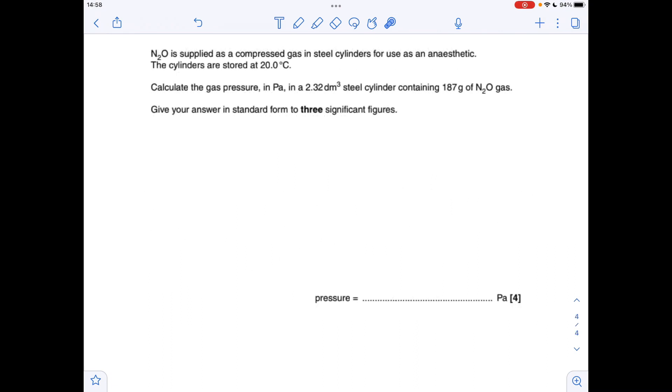And the final question, so this is an ideal gas question, we've got the temperature, we've got the volume, and we've got enough information to calculate the moles of N2O. So we've got to calculate pressure, so the ideal gas equation rearranges to this, NRT over V. So the first thing we'll do is calculate the moles of N2O.